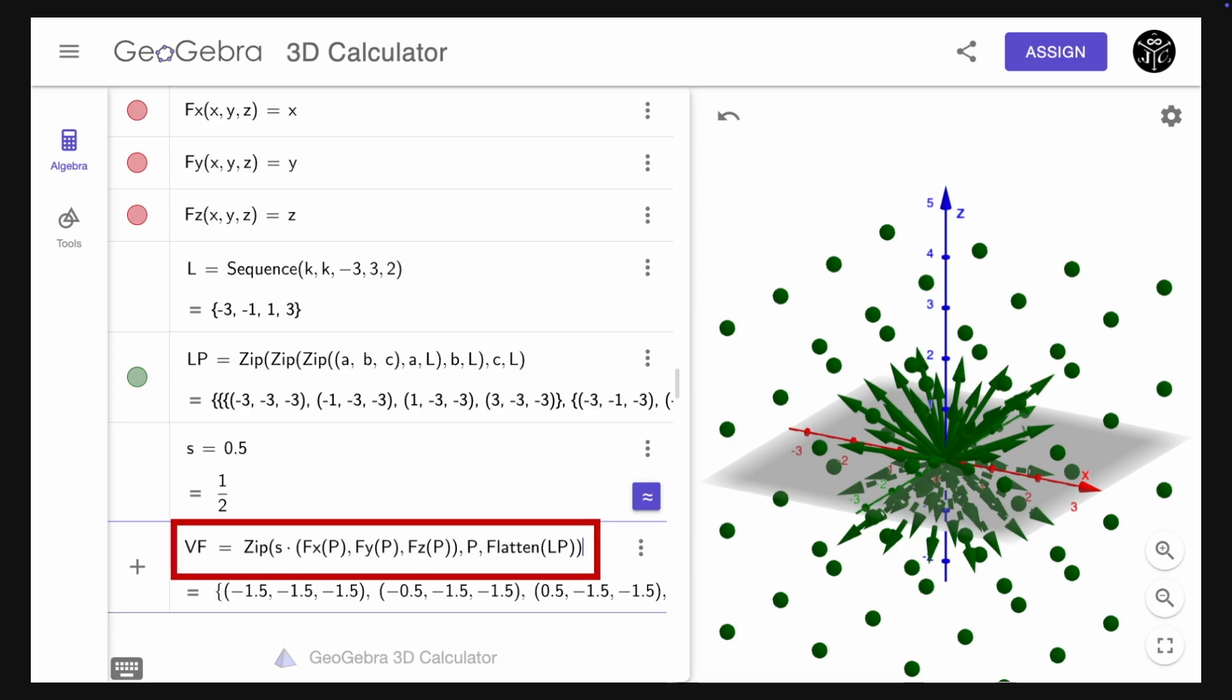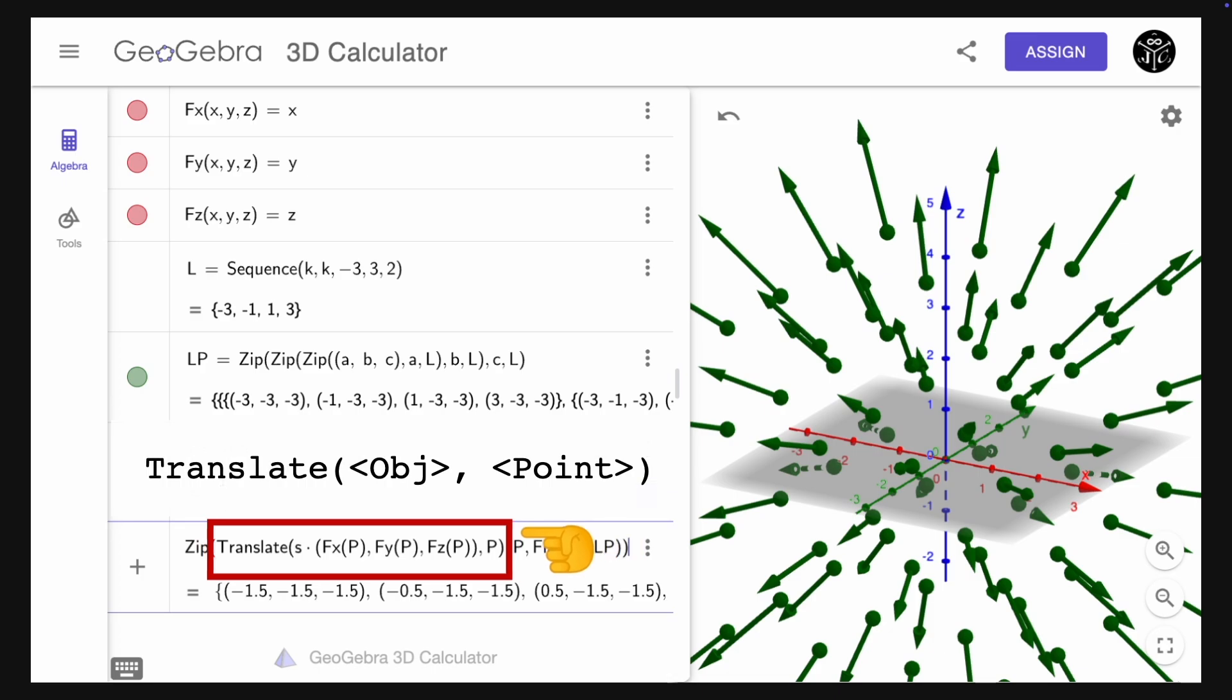Notice that now we have plotted the vectors, but the problem is that all the vectors start at the origin. We can adjust the position by introducing the translate command. In this case, we translate the vectors to the point P, which belongs to the list LP.